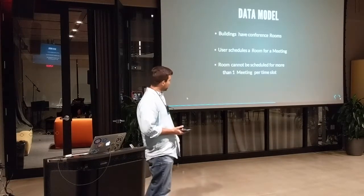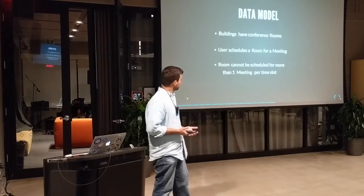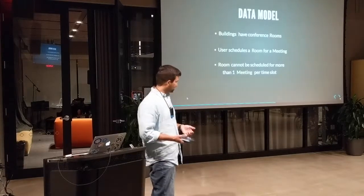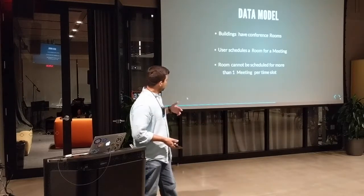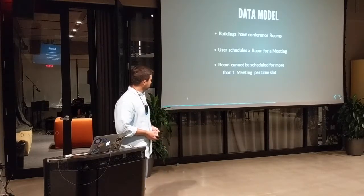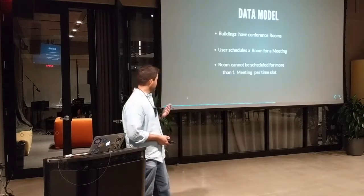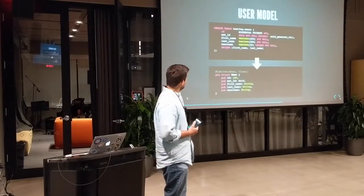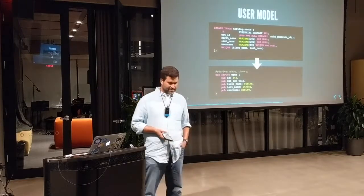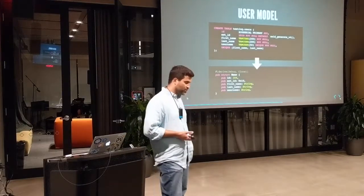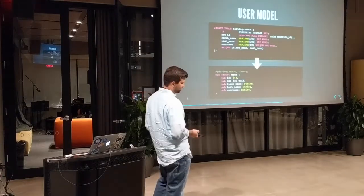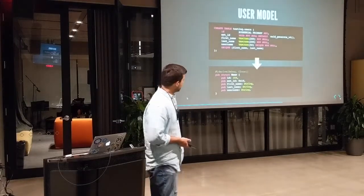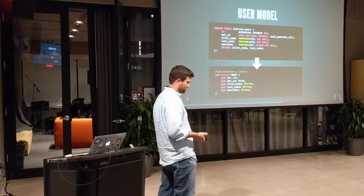Our data model in this program has four types of models: buildings, rooms, users, and meetings. It's pretty simple. Buildings have conference rooms. A user can book a meeting. A room cannot be scheduled for more than one meeting at the same time.